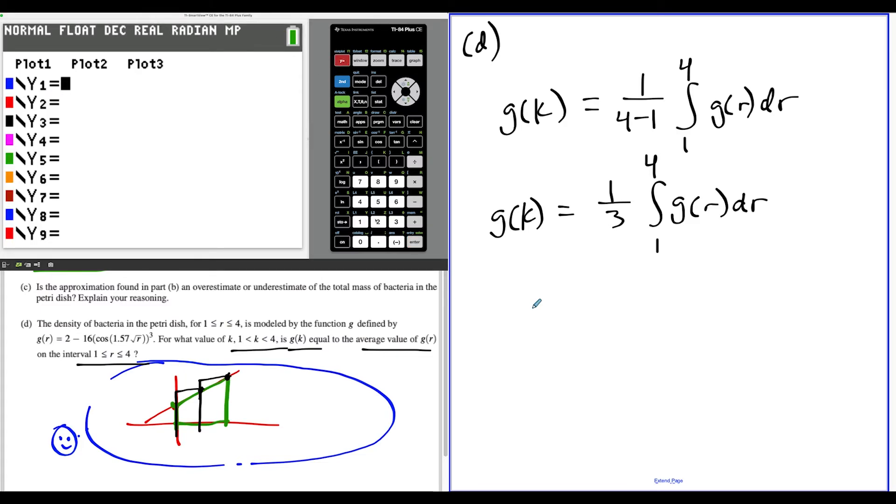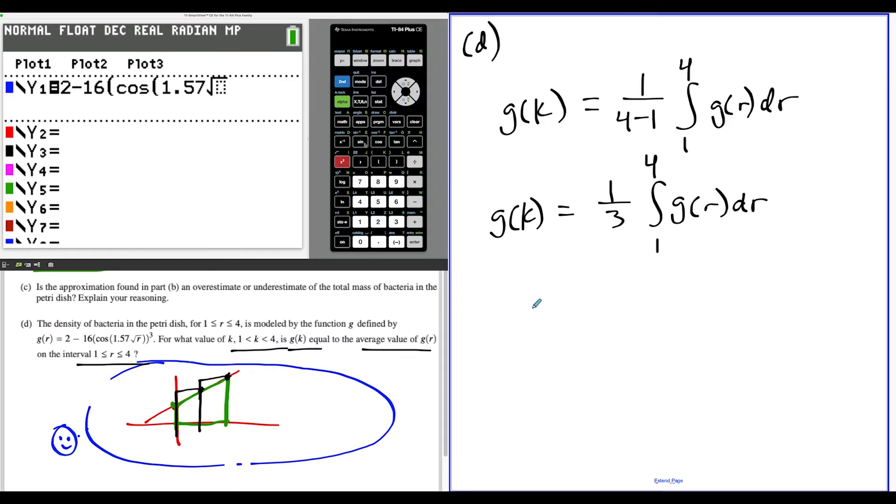The best thing we could do is type the function in first. We have 2 minus 16, then parentheses, we have cosine. In the parentheses, we have 1.57, then the square root of r—we'll write this as square root of x. One thing to be mindful of is once we get out of this, we have to close the parentheses around the inside of the cosine function, then close it around the outside and raise all of that to the third power.